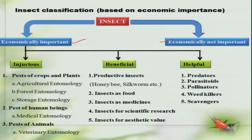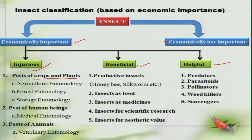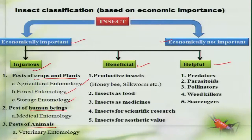Under the economically important group, the insects are broadly categorized as the injurious group, the beneficial group, and the helpful group. The injurious group mainly includes those insects which cause physical and physiological damage to our crop plants, to human beings, and to animals. Those which cause damage to agricultural crops are referred under agricultural entomology, those which are pests to forest plants under forest entomology, those which cause damage to storage grains under storage entomology, and insects which directly or indirectly cause damage or annoyance to human beings are referred under medical entomology.